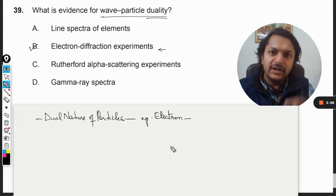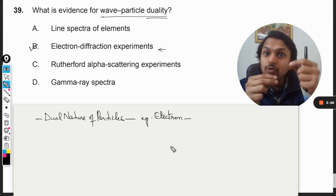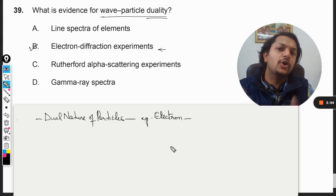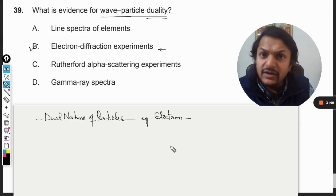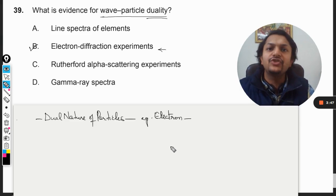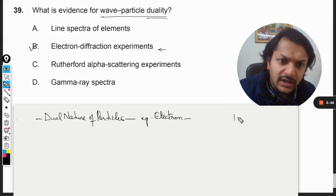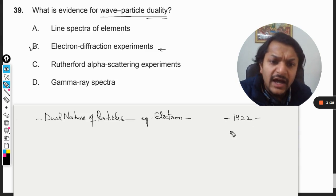particle - the particle that is revolving around the nucleus. We have been applying all those formulas earlier like centripetal force and coulombic forces, treating electron as a particle. But all of a sudden, there is a theory that was given in 1922, if I remember correctly.